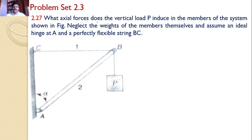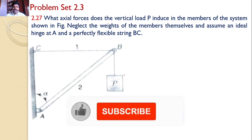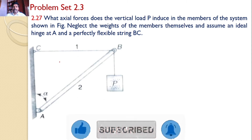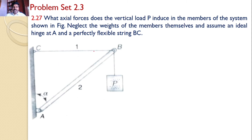What axial forces does the vertical load P induce in the members of the system shown in the figure? Neglect the weight of the members themselves and assume an ideal hinge at A and a perfectly flexible string BC. That means a vertical load P is supported by a string and a bar. We need to find the forces developed in string BC and bar AB.